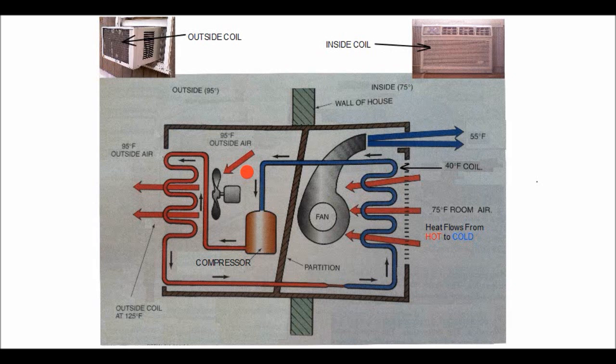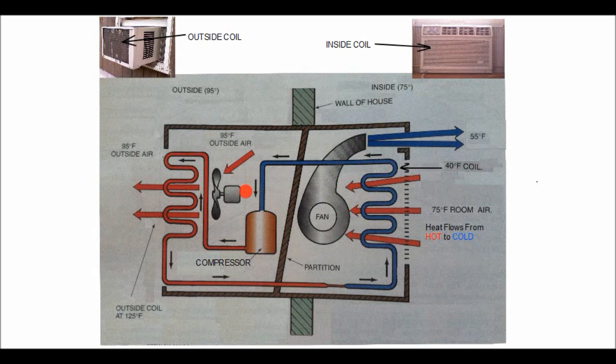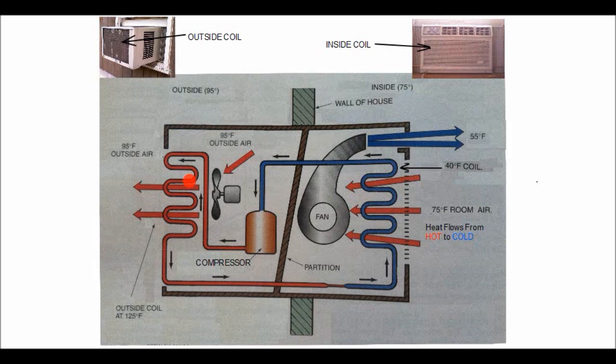The outdoor fan takes the 95 degree air, blows it across the 125 degree coil. Now that 95 degree outside air is cooler than the 125 degree coil, so the heat flows out of the coil and into the 95 degree outside air.